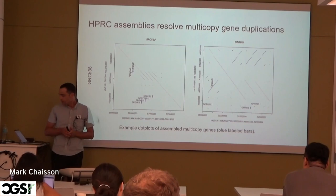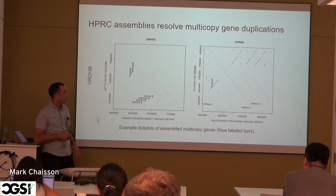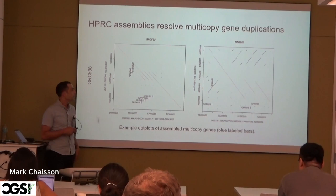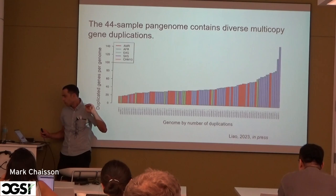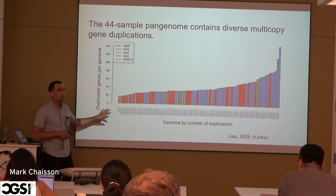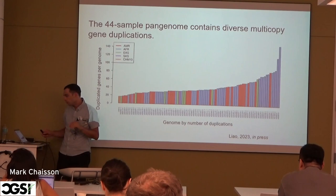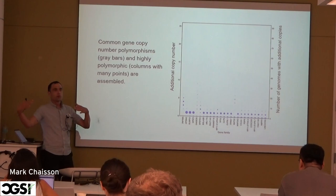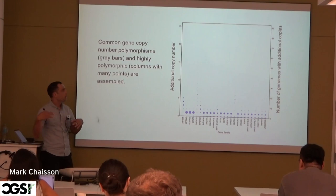In these assemblies, we can find sequence-resolved copy number variants. Here are two dot plots from different regions of different assemblies showing two genes that have undergone expansions — Spdye2 and GPRN2. In one case there's one extra copy of GPRN2, in another there are two extra copies of Spdye2, and importantly they're sequence resolved. Within these 44 haplotype-resolved genomes — 88 assemblies — we find between 20 and up to 140 additional copies of genes, including highly polymorphic high-copy-number genes.